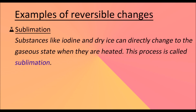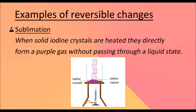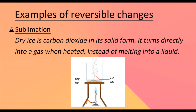Sublimation. Substances like iodine and dry ice can directly change into the gaseous state when they are heated — this process is called sublimation. When solid iodine crystals are heated, they directly form a purple gas without passing through the liquid state. Dry ice is carbon dioxide in its solid form; it turns directly into a gas when heated instead of melting into a liquid.